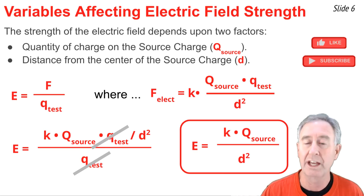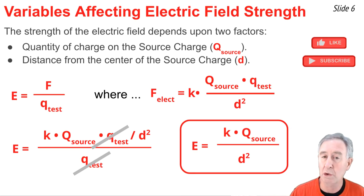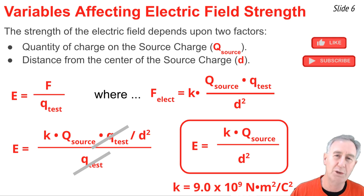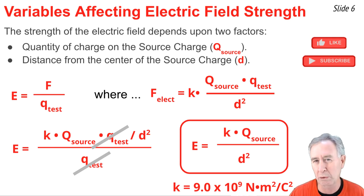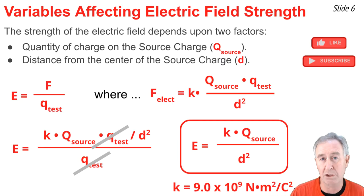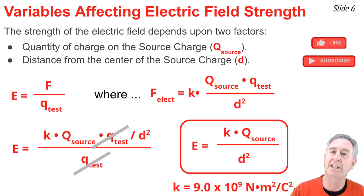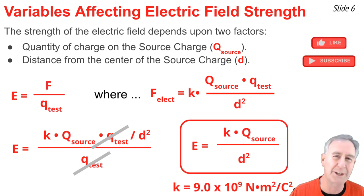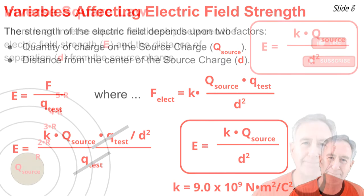This gives us an equation for electric field expressed in terms of the two variables that affect its strength: E = k·Q_source / d². In this equation, k is the Coulomb's law constant with a value of 9 × 10⁹ N·m²/C²; Q_source is the quantity of charge on the source; and d is the separation distance from the center of the source to a particular location.